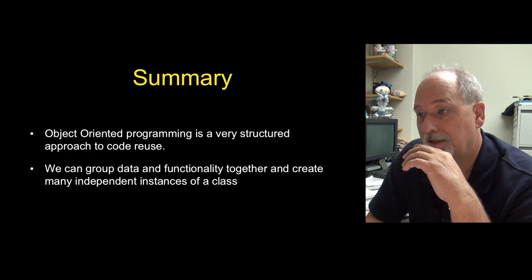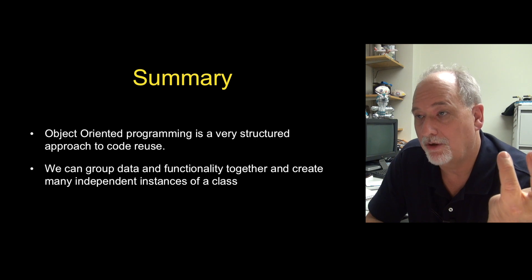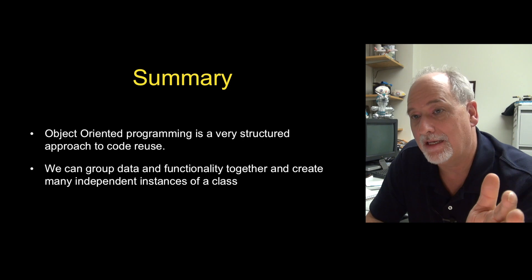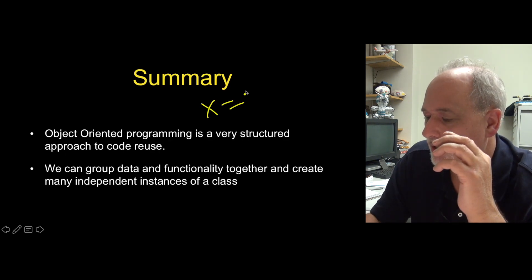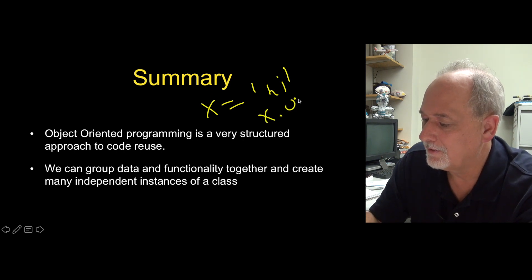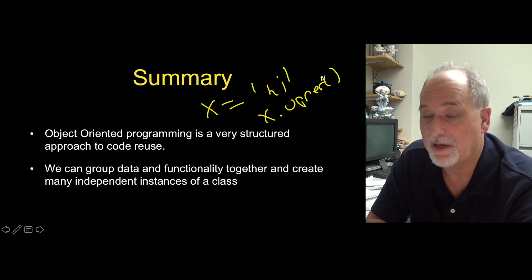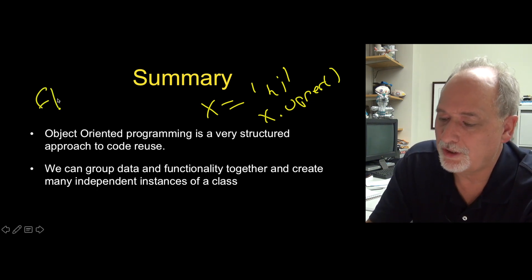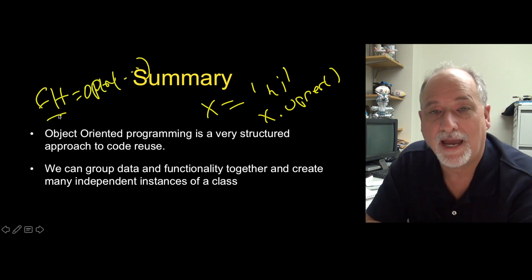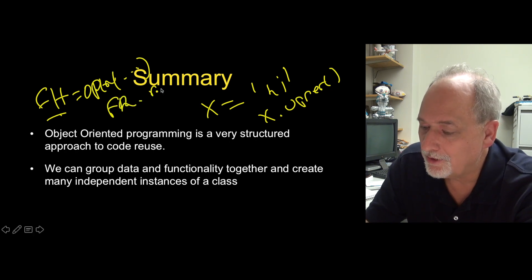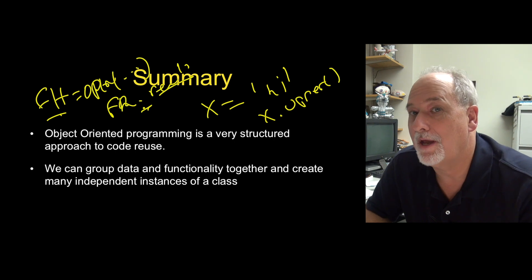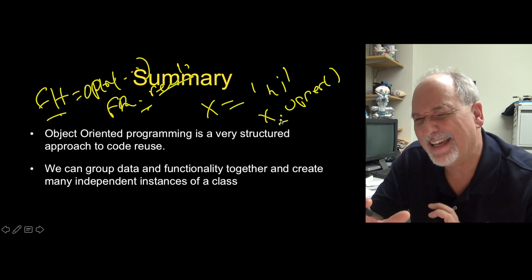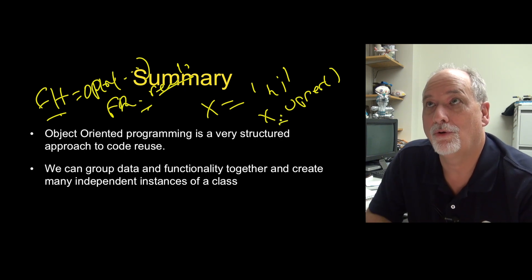Object-oriented is awesome. For the rest of this class, we're not going to write any object code or use the class keyword at all, but we are going to use objects. You've actually been using objects from the beginning of this course — as soon as you said x equals 'hi', that's an object, and x.upper() is calling a method. When you do fh equals open(...), what you get back is an object, and fh.read() is calling a method using the dot operator. So you've been using objects all along.